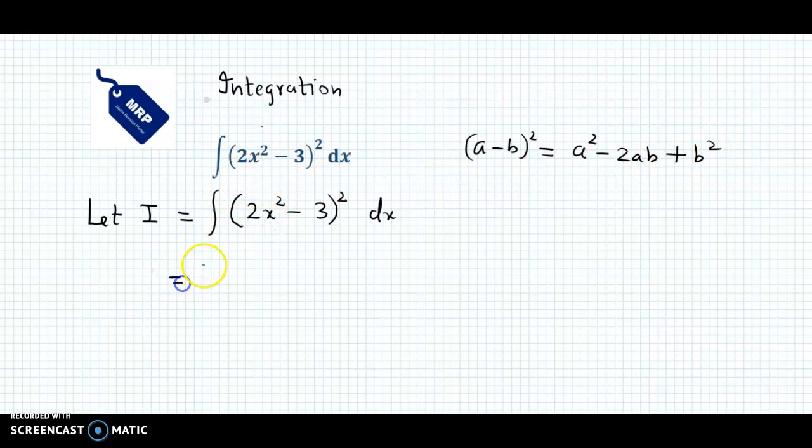we obtain the integration of (2x²)² which becomes 4x⁴ minus 2ab. So 2 times 3 is 6, 6 times 2 is 12. So we will have 12x² plus 3², which is 9.